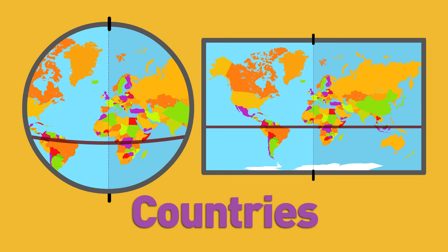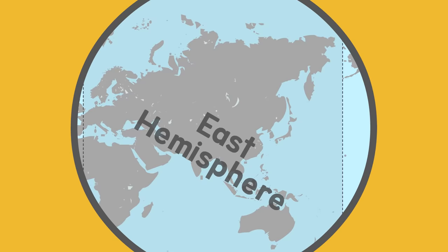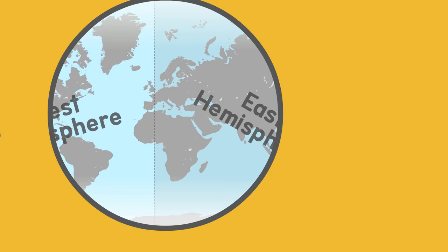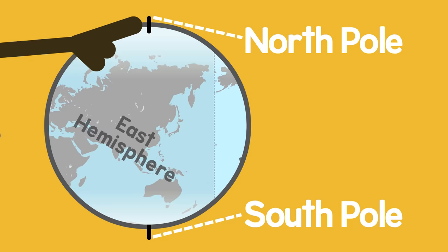The real world is rounded, shaped like a sphere, and divided into east and west hemispheres. There's east and there's west. On the top and the bottom, where it's always cold, are two points we call the north and south poles.